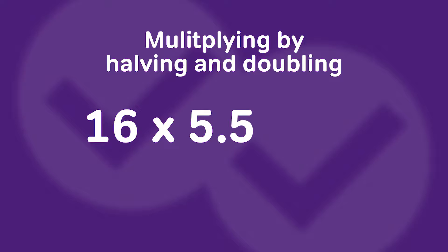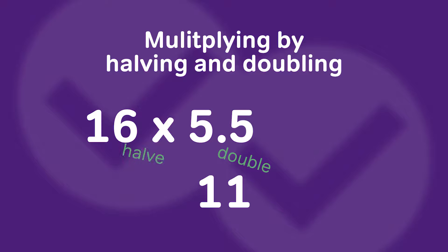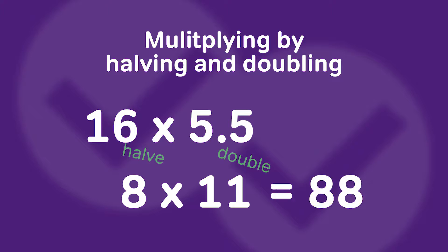5.5 — we want it to not have a decimal. So what can we do with that 0.5? We could double it. Double 5.5 is 11. But if we doubled 5.5, what do we have to do to that 16? We have to halve it. So 8 times 11 is 88. Or 16 times 5.5, which looked really hard a second ago, is simply 88.